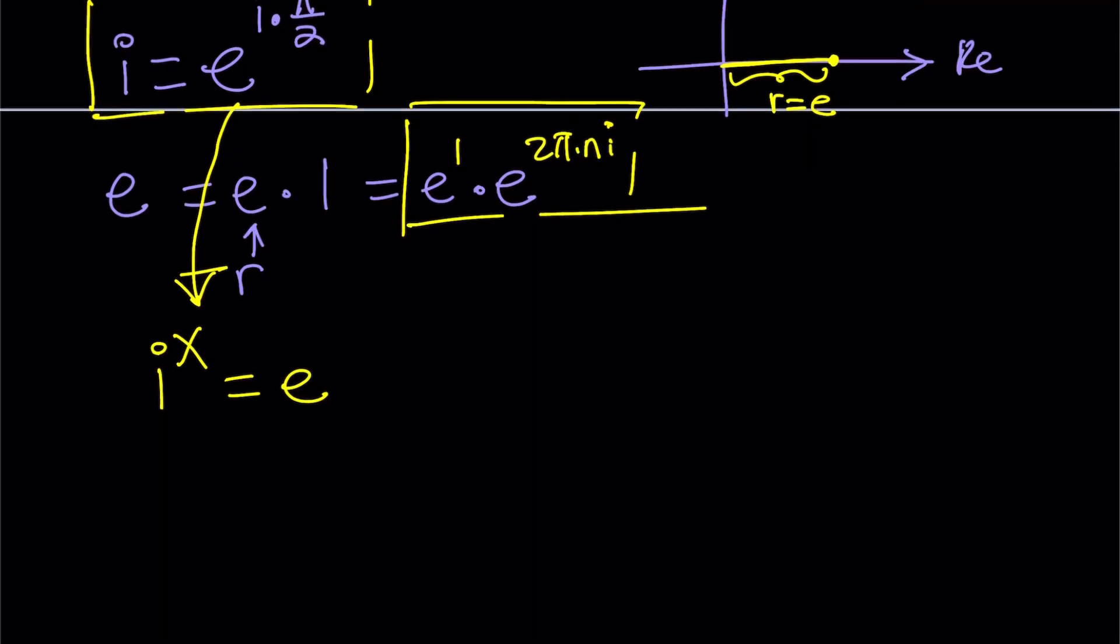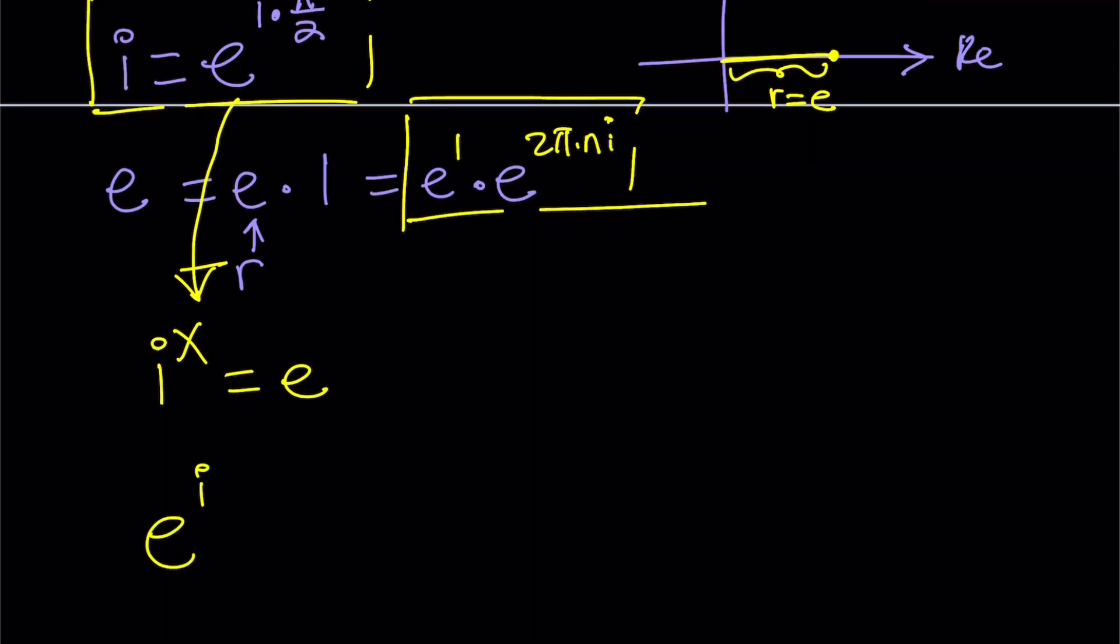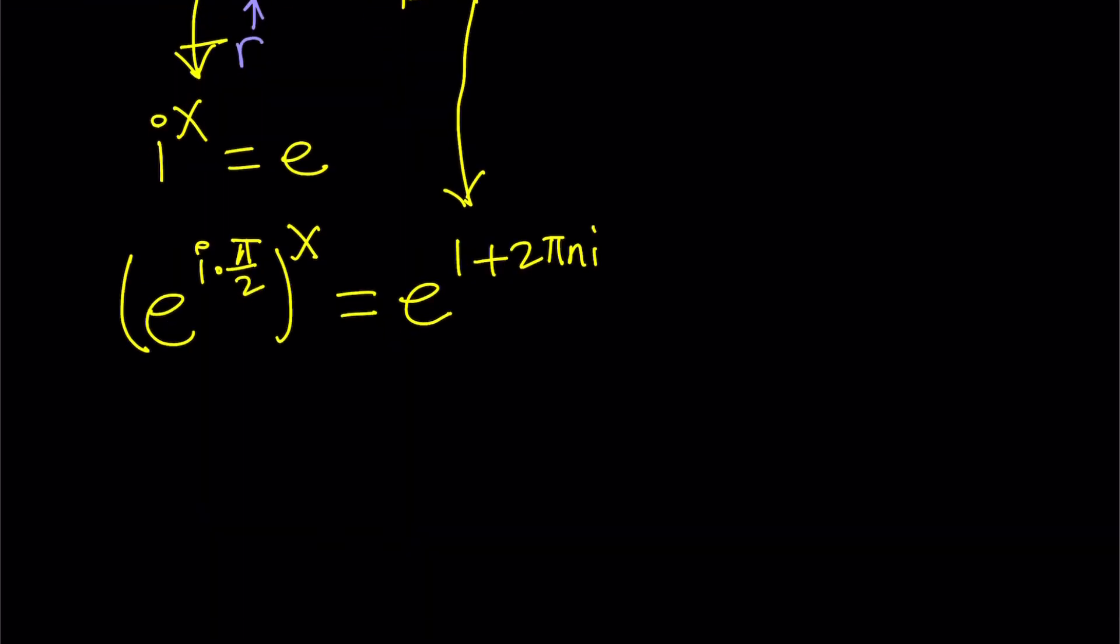So I'm going to replace i with this. Let's do it. e to the power i times pi over 2. And then I'm going to raise it to the power x and then set it equal to e, which comes from here, e to the power. Now, by the way, I can just add the exponents because they have the same base. So I can write it as 1 plus 2 pi n i. Some people write it as 2 n pi. Sometimes I do. It doesn't matter the same thing. But I'd like to put the i at the end because when you write it like this, that doesn't look good.